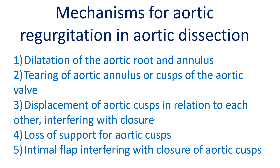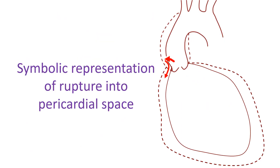Additional mechanisms for aortic regurgitation include loss of support for aortic cusps and the intimal flap interfering with closure of aortic cusps. Those with severe aortic regurgitation secondary to acute aortic dissection present with acute left ventricular failure and cardiogenic shock.